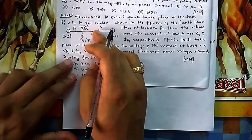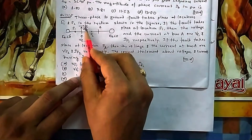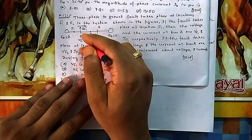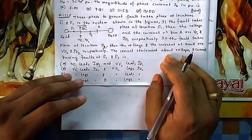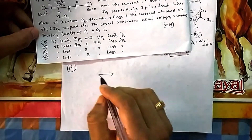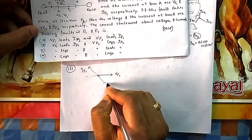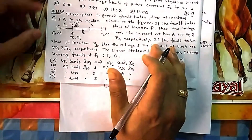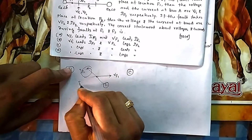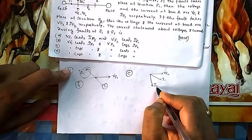Now for fault F1 — when the fault occurs, current will come from both sides feeding into the fault point. This current will go in the reverse direction compared to normal. Power flow reverses when the angle between voltage and current exceeds 90 degrees. So if this was your V_F1 and normally I was flowing in one direction, with reversed power flow I_F1 now leads, meaning V_F1 lags — that is option C for the F1 case.